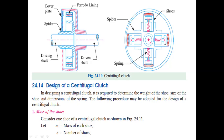When the centrifugal force equals the spring force, the shoe is just floating. When the centrifugal force exceeds the spring force, the shoes move outwardly and come into contact with the driven member. The shoes press against the driven member, and this increase in speed causes the shoes to press harder, enabling more torque to be transmitted.